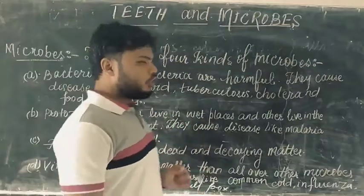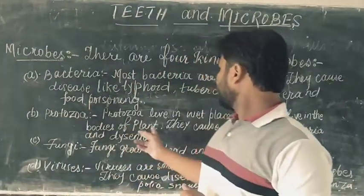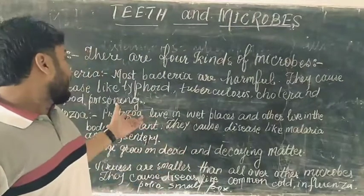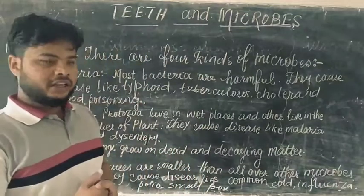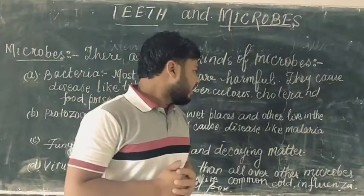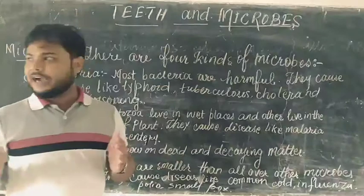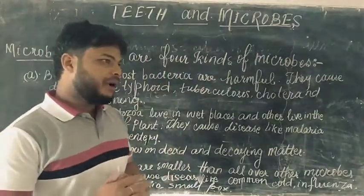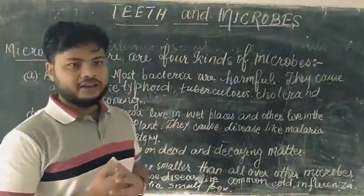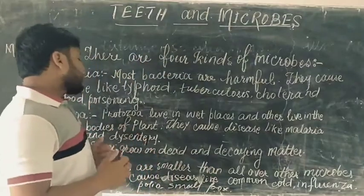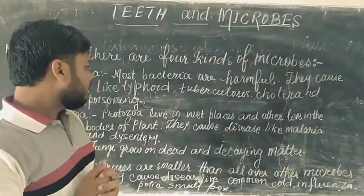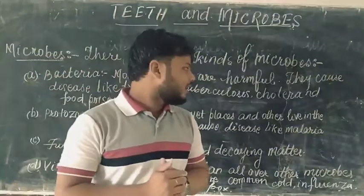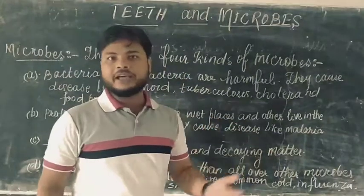The next type is protozoa. Protozoa live in wet places and also in the bodies of plants. They cause diseases like malaria and dysentery, so dysentery and malaria are caused by protozoa.